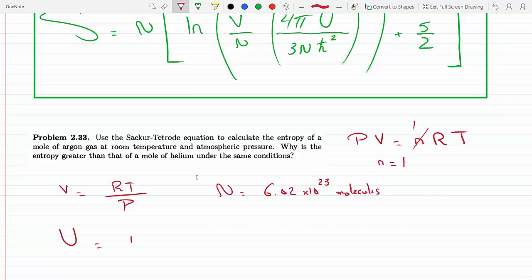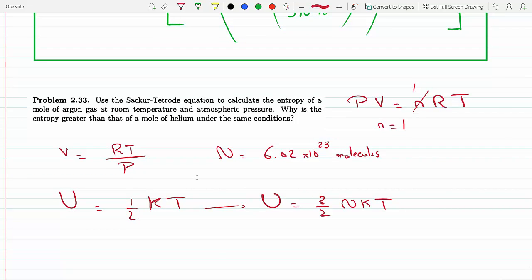This is a monoatomic gas. The internal energy of a monoatomic gas is one half kT for every molecule per one degree of freedom. For an ideal gas, this equation becomes 3 over 2 n kT. We multiply by the number of molecules, which is n, and then multiply by 3, which is the degrees of freedom of a monoatomic ideal gas.